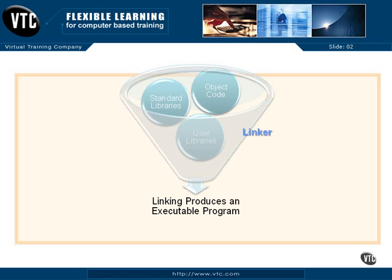To recap: a compiler — the program we've just installed — is going to take our C programming instructions and turn them into object code. The link step is then going to link our object code with some standard libraries that already exist and produce executable code. So the key difference is between source code, which is what you can easily read written in a form of English; object code, which is the output of the compiler; and executable code, which is a combination of object code and other standard libraries and possibly user libraries, so that we can get an executable program to run.